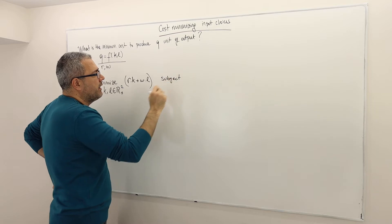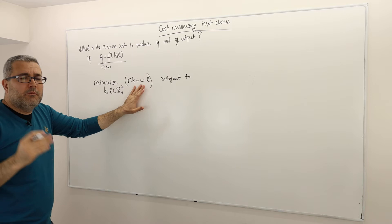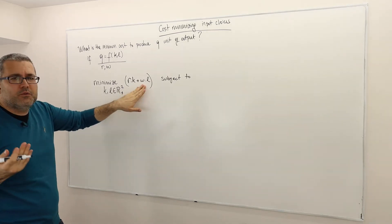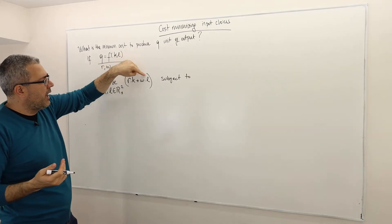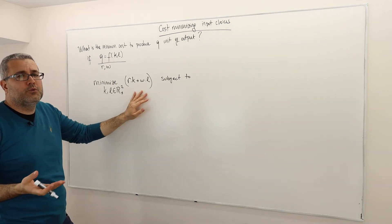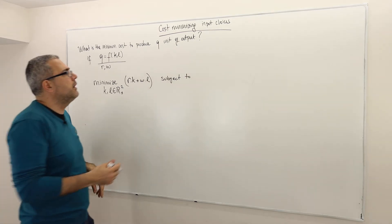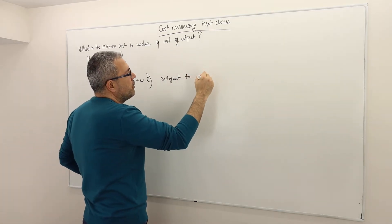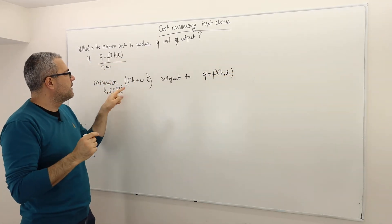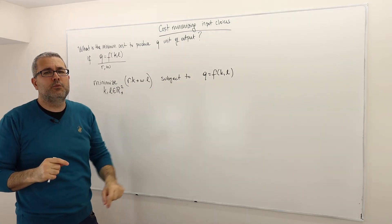Do we have any constraint? Yes. Obviously, if you want to minimize cost, the minimum cost you can get is zero — just choose K equals zero and L equals zero. But the thing is, I don't want to produce zero units of output. I want to produce Q units of output. So the constraint is Q equals F of K, L. For simplification, we also ignore fixed costs and focus only on variable cost.